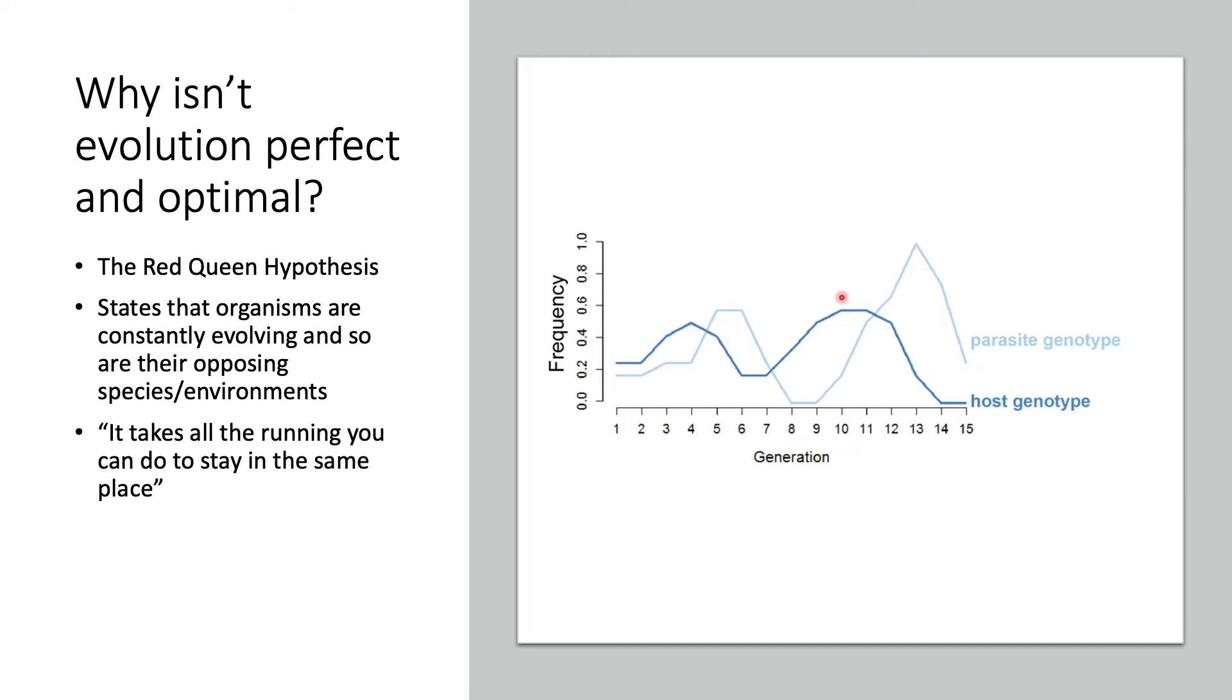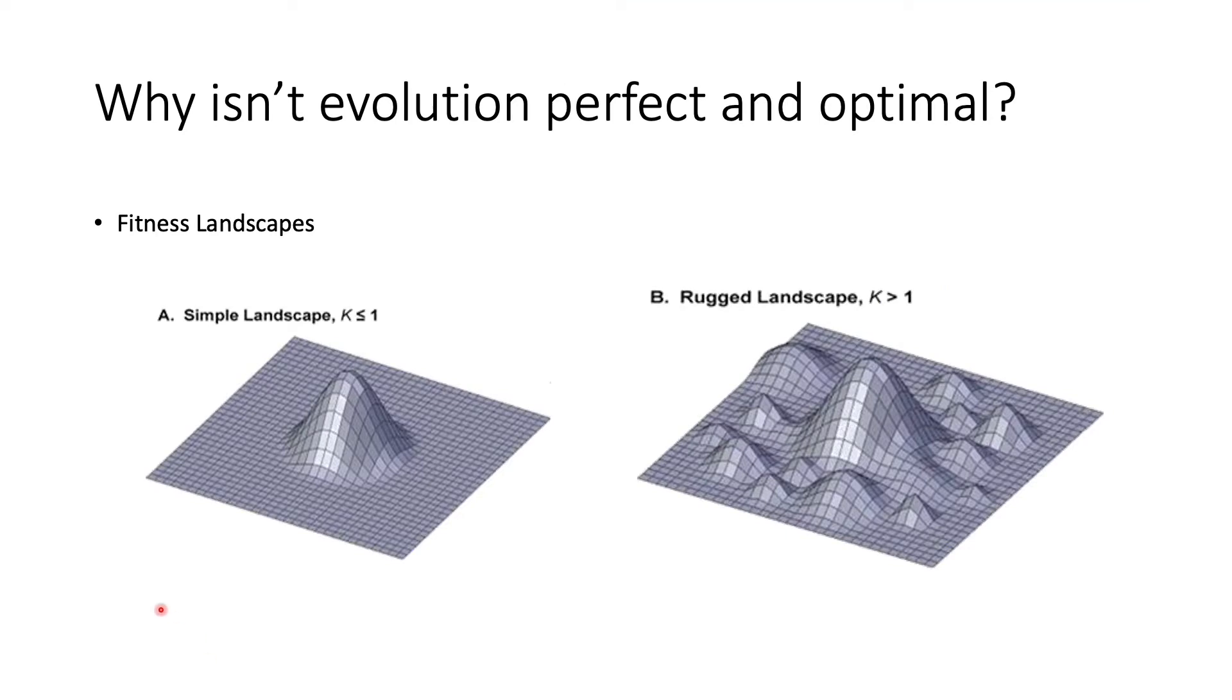Another lens we can look at this question through is called local adaptive peaks or fitness landscapes. We can break down different traits of an organism and plot them to get a fitness landscape. For a certain set of traits, let's say trait A and trait B on the plane here, fitness will be maximized. For those two sets of traits, we go upwards in a 3D plane—that is the level of fitness increasing. We can see a peak where fitness can be maximized for certain traits.